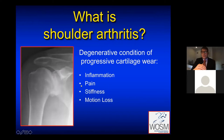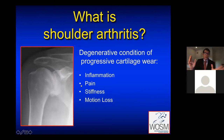Now I'd like to segue into shoulder arthritis. Shoulder arthritis is a degenerative condition of progressive cartilage wear involving inflammation, pain, stiffness, and motion loss. One thing patients can get confused about is that arthritis is different in every part of our body. We can have osteoarthritis, we can have inflammatory arthritis such as lupus and rheumatoid arthritis. But just because you have arthritis in your spine or your hip doesn't mean you're necessarily going to get arthritis in your shoulder. Every joint is individual and specific.